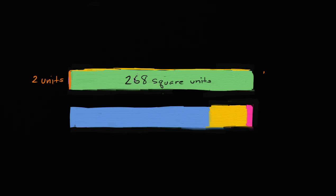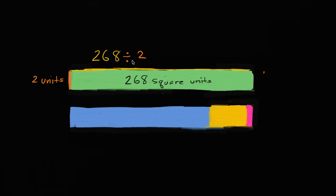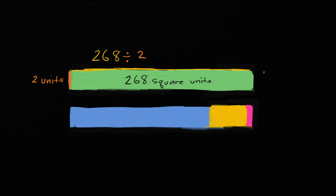Well, if you multiply these two sides, you get the area. So if you start with 268 and you divide by the other side, you're going to get the length of this side right over here. So it would be 268 divided by two. We've already seen multiple ways to figure out what 268 divided by two is. But the whole reason for drawing this rectangle is so that we visualize it using area. One way to do it is to break up this 268 square unit area into areas that are easier to imagine dividing by two.